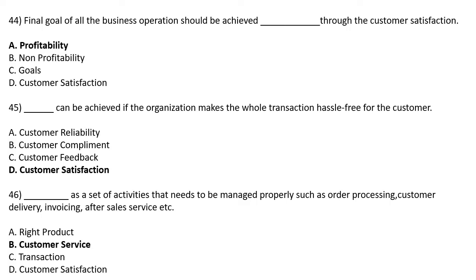DASH is a set of activities that need to be managed properly, such as order processing, customer delivery, invoicing, after-sale service, etc. — Option A: Right Product, Option B: Customer Service, Option C: Transaction, Option D: Customer Satisfaction. The correct answer is Option B: Customer Service.